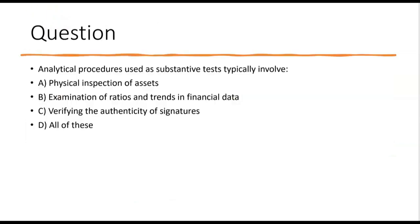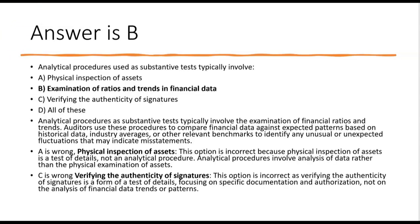Analytical procedures are often used in conjunction with other substantive tests. For instance, if an analytical procedure reveals an anomaly in inventory levels, the auditor might perform physical inventory counts to further investigate. Question: Analytical procedures used as substantive tests typically involve what? A — physical inspection of assets; B — examination of ratios and trends in financial data; C — verifying the authenticity of signatures; D — all of these. The answer is B.